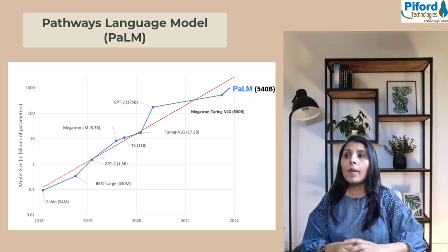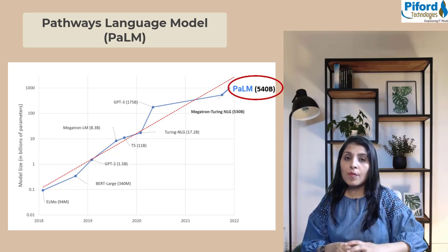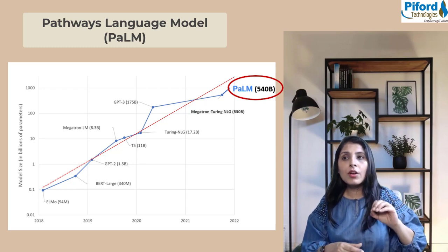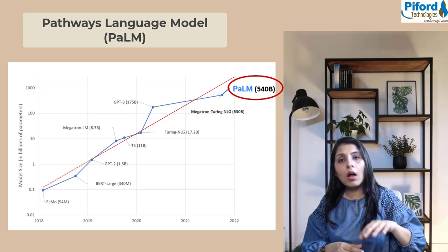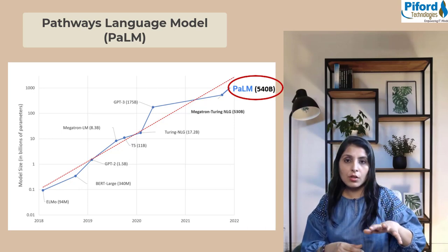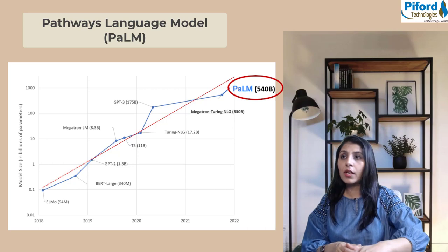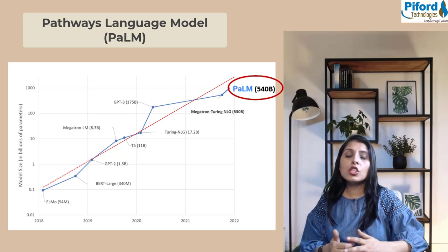Now Google released PaLM with 540 billion parameters, and this is the largest language model. This model is a dense model and all parameters are used during inference.